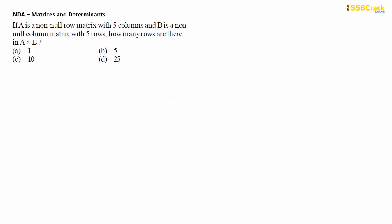First question: If A is a non-null row matrix with five columns and B is a non-null column matrix with five rows, how many rows are there in A cross B? Options: 1, 5, 10, or 25.